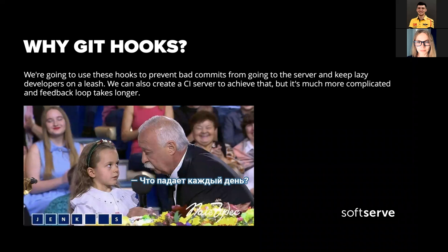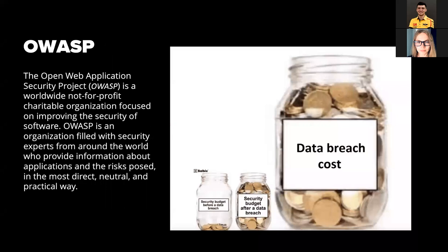Git hooks can also help in discovering potential security threats early. Every year, tech companies around the world lose a lot of money from cyber attacks. That's why we need to talk about OWASP. OWASP is the Open Web Application Security Project — a nonprofit foundation that works to improve the security of software. OWASP is an organization filled with security experts from around the world who provide information about application risks in the most direct and practical way.